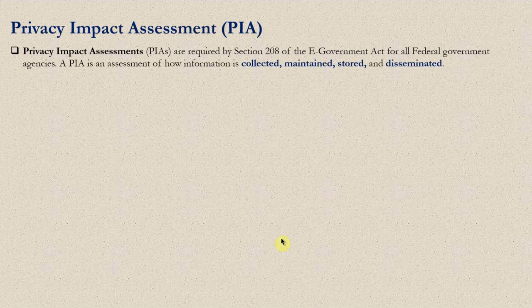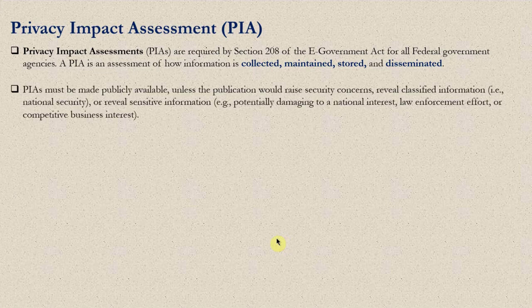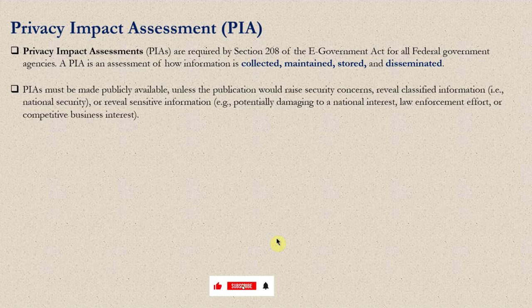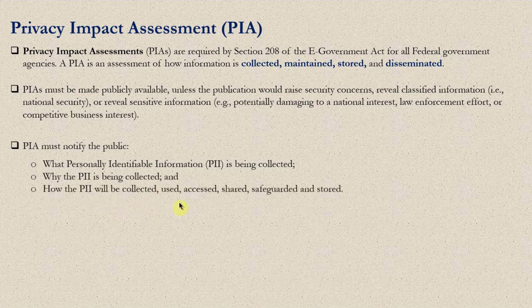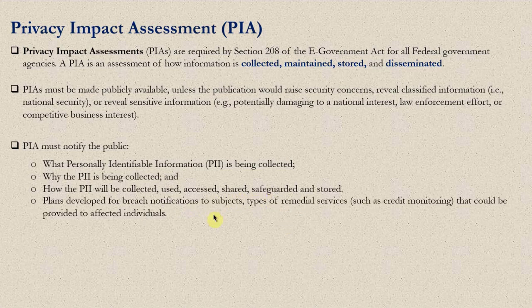Privacy Impact Assessments (PIAs) are required by Section 208 of the E-Government Act for all federal government agencies. A PIA is an assessment of how information is collected, maintained, stored, and disseminated. PIAs must be made publicly available unless publication would raise security concerns, reveal classified or national security information, or reveal sensitive information potentially damaging to national interest, law enforcement efforts, or competitive business interests. The PIA must notify the public when PII is being collected, how PII will be collected, used, accessed, shared, safeguarded, or stored, and must contain a plan for breach notification and remedial services such as credit monitoring.